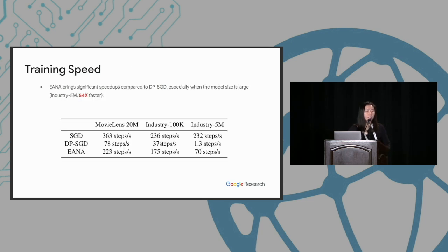And here is the result for the training speed. So it's easy to see that adding noise slows down the training speed as both DPSGD and IANA lead to slower training speed compared to SGD. However, the traditional DPSGD suffers more severely due to the communication and computation overhead. And for the industry 100K case, IANA performs like the training speed of IANA is 4.7 times faster than DPSGD. And when we go to a really large-scale dataset and model, the speedup is more significant and we observe like 54 times speedup for IANA compared to DPSGD.